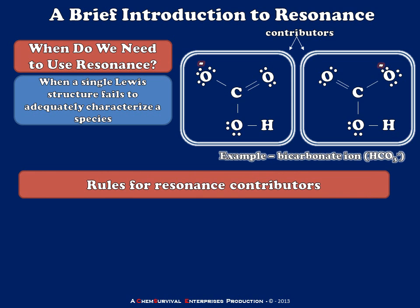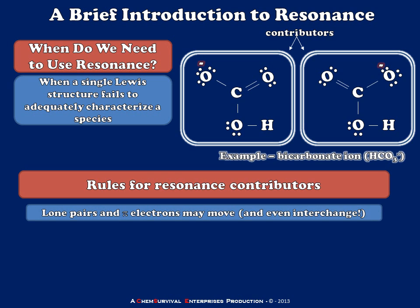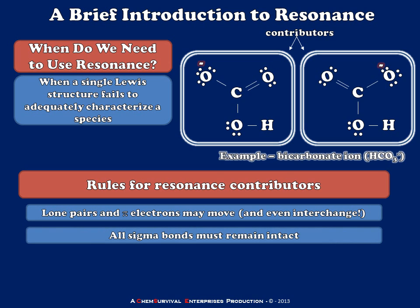Let's go through some rules for drawing resonance contributors. First, lone pairs and pi electrons are free to move and even interchange — pi electrons can become lone pairs and lone pairs can become pi electrons. However, all sigma bonds must remain in place. We can't break a sigma bond because that would completely break the bond between two atoms, changing the identity of the species.